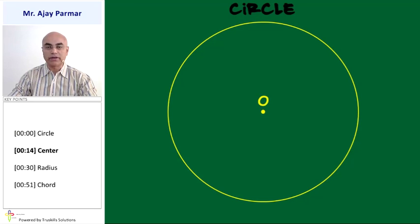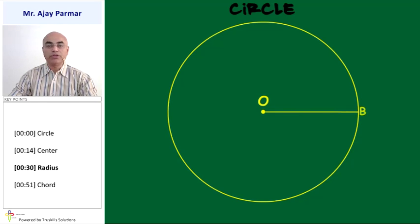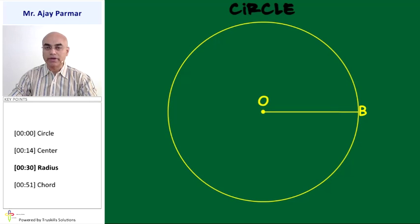O is the center, whereas the given circle is only the arc that has been drawn. If we join the center with any point on the circle, then we get the radius of the circle. In this case, line segment OB is the radius.